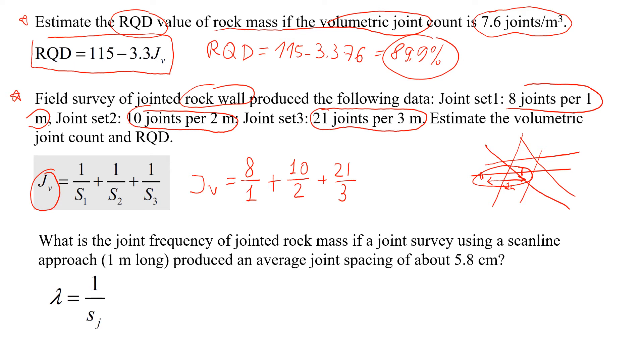In the end that will give us a value of approximately 20 joints per cubic meter.